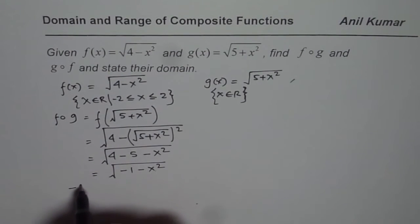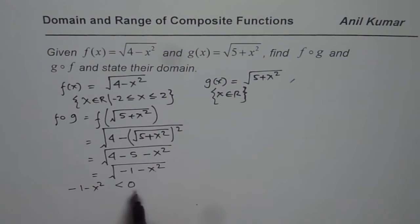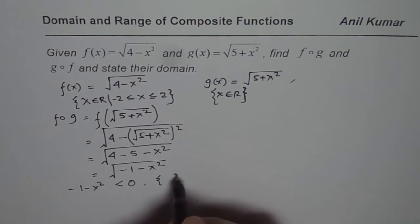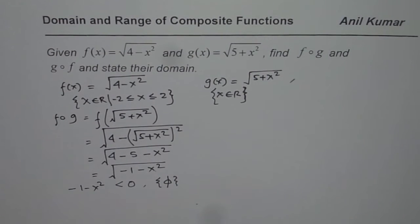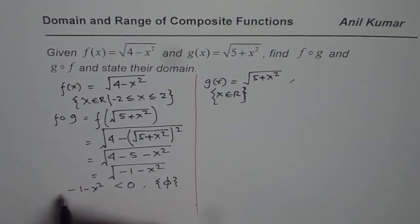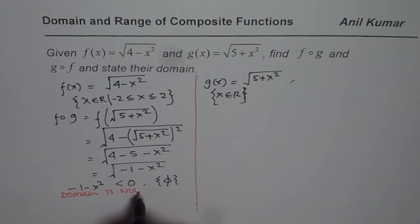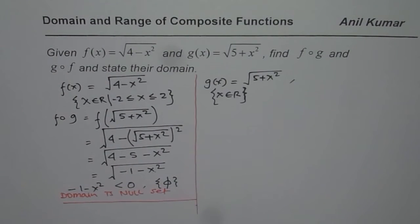Since minus 1 minus x squared is always less than 0 and never positive, this function's domain does not exist. We say the domain is the null set, written as phi (φ). The domain has no value in real numbers in this particular case. This is a very typical example and is therefore often asked in test papers.